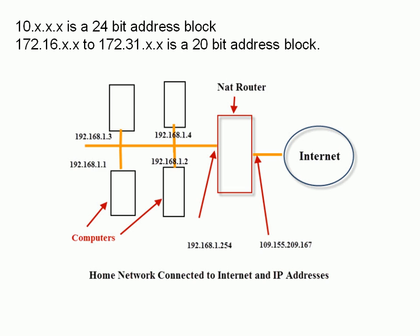It's a logical network diagram, not a physical one. It shows a collection of computers on the home network with IP addresses assigned to them. They're connected to the internet using a NAT router — you'll probably know this as a broadband or DSL router — usually provided by your internet service provider to connect your home or small office network to the internet.